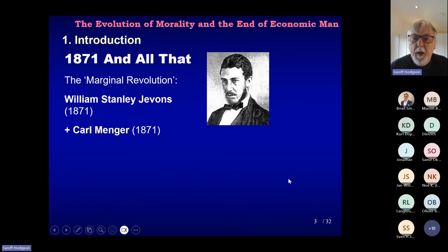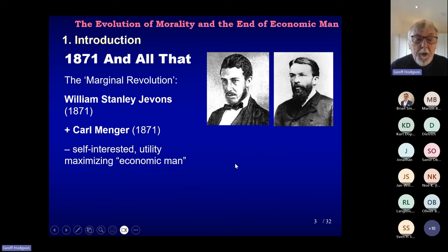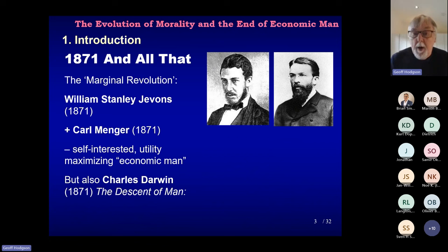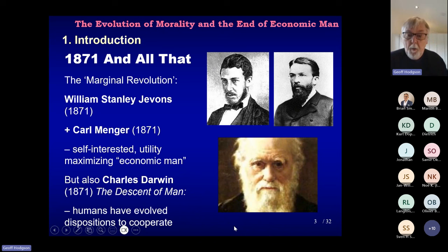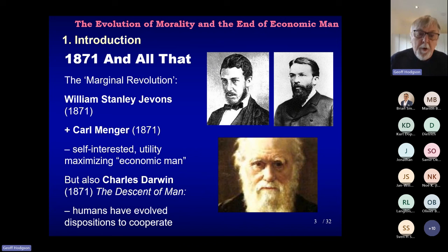Crucial year then is 1871. People often forget that with this idea of self-interest maximising man, Charles Darwin in the same year also published The Descent of Man. The two sets of books have not often been compared, but there's clearly an attempt in Darwin's work — when he considers human groups and human reality — to say that humans have evolved dispositions to cooperate. While Menger and Jevons emphasise self-interest, that isn't strictly necessary for utility maximisation.